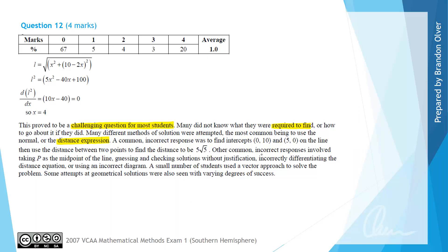Other common incorrect responses involved taking P as the midpoint of the line, or guessing and checking solutions without justification. Incorrectly differentiating the distance equation, or using an incorrect diagram were other incorrect responses that were seen. A number of students used a vectors approach to solve the problem, and some attempted geometrical solutions which were seen with varying degrees of success.